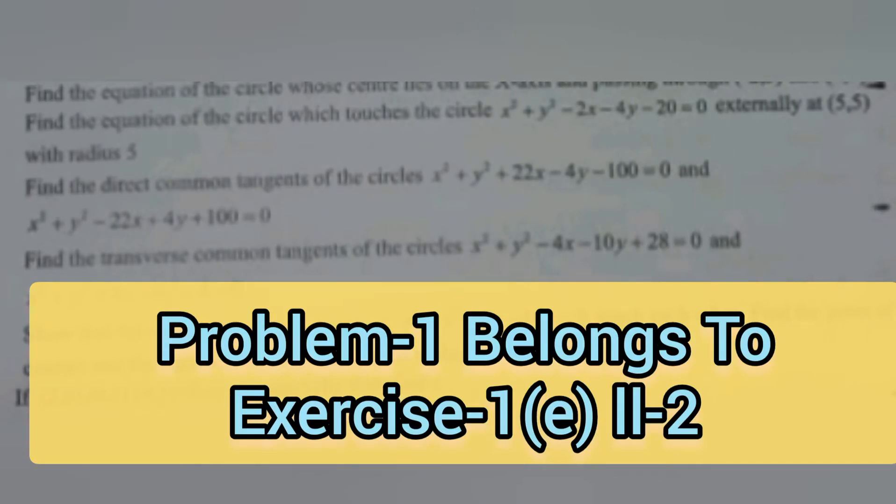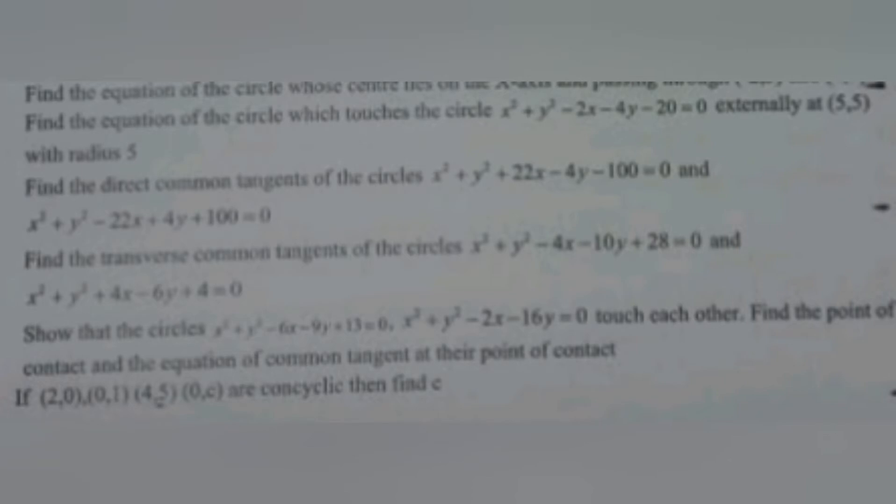The first problem is: find the equation of the circle which touches the circle x² + y² - 2x - 4y - 20 = 0 externally, at (5, 5) with radius 5. This is Exercise 1E, Roman number 2, question number 2 in the textbook.